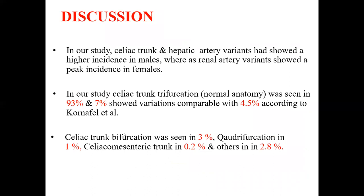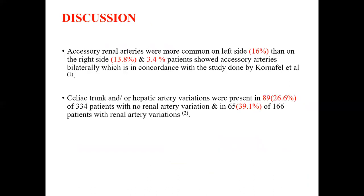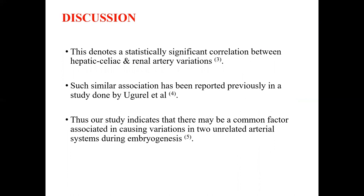In our study, celiac trunk and hepatic artery variants showed a higher incidence in males, whereas renal artery variants showed a peak incidence in females. Celiac trunk trifurcation was seen in 93% and 7% showed variation, comparable with 4.5% according to Kornophil et al. Celiac trunk bifurcation was seen in 3%, quadrification in 1%, celiacomesenteric trunk in 0.2%, and others in 2.8%. Accessory renal arteries were more common on the left than on the right. Celiac trunk or hepatic artery variations were present in 89 of 334 patients with no renal artery variation and in 65 of 166 patients with renal artery variation. This denotes a statistically significant correlation between hepatic, celiac, and renal artery variation.